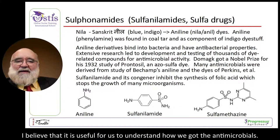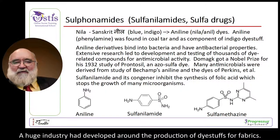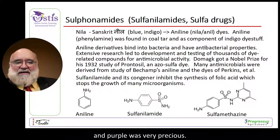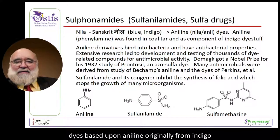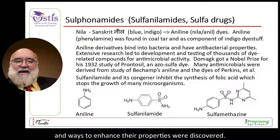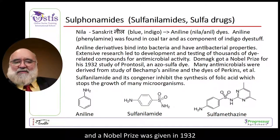It is useful for us to understand how we got antimicrobials. A huge industry had developed around the production of dye stuffs for fabrics; previously, dyes came from plants or sea snails and were very precious. Dyes based upon aniline, originally from indigo, were found to have antibacterial properties, and ways to enhance those properties were discovered. The sulfa drugs came from such studies, and a Nobel Prize was given in 1932.